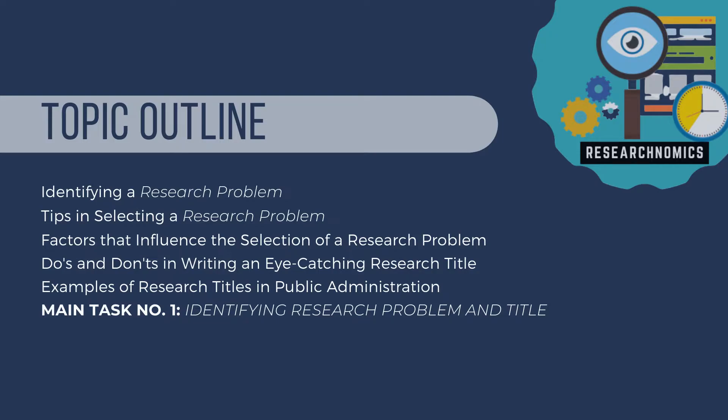For our topic outline, we will begin with identifying a research problem, followed by the tips in selecting a research problem, factors that influence the selection of a research problem, the do's and don'ts in writing an eye-catching research title, examples of research titles in public administration, and your main task number one: identifying a research problem and title.